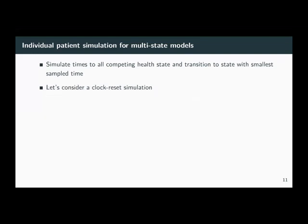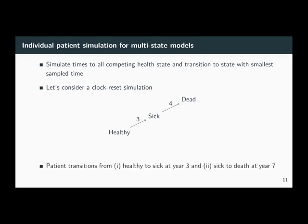Let's take a look at our clock reset example. A patient starts in the healthy state and we sample that the transition to the sick state takes three years and to death takes eight years. So they go to the sick state first. Next, we sample time to death and time to healthy as those are the competing health states. Death occurs first in the simulation. So essentially the patient transitions from healthy to sick at year three, and then from sick to death at year seven. We repeat this process for all patients in the simulation.